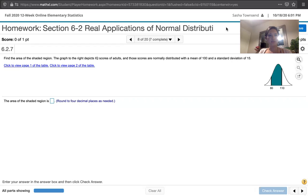In this video, we solve Problem 6.2.7 from Essentials of Statistics, 6th edition by Mario Triola. The problem statement says, find the area of the shaded region. The graph depicts IQ scores of adults and those scores are normally distributed with a mean of 100 and a standard deviation of 15.